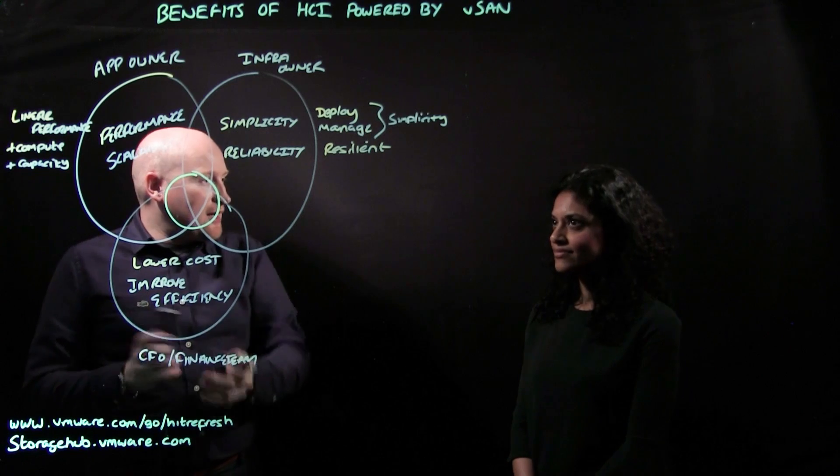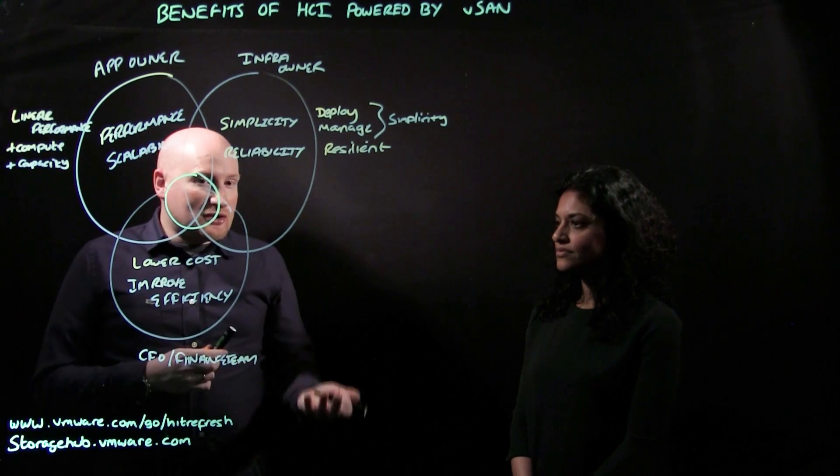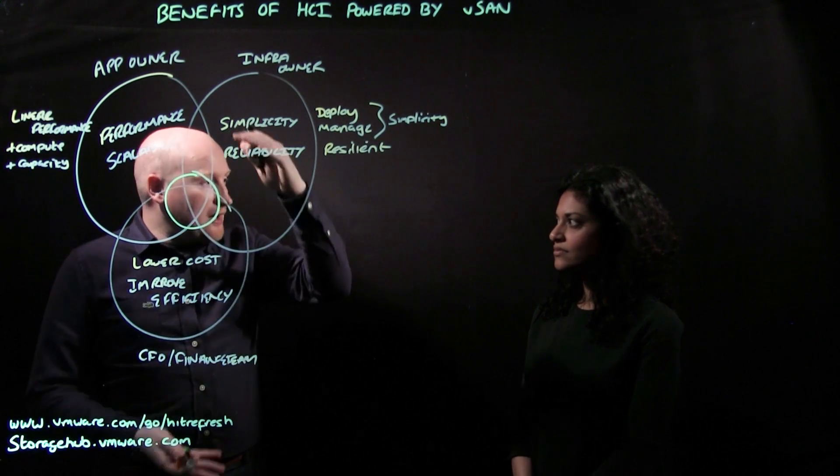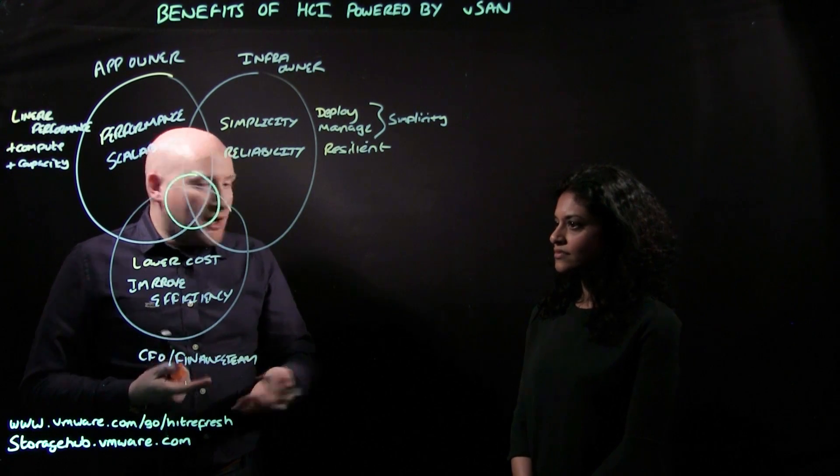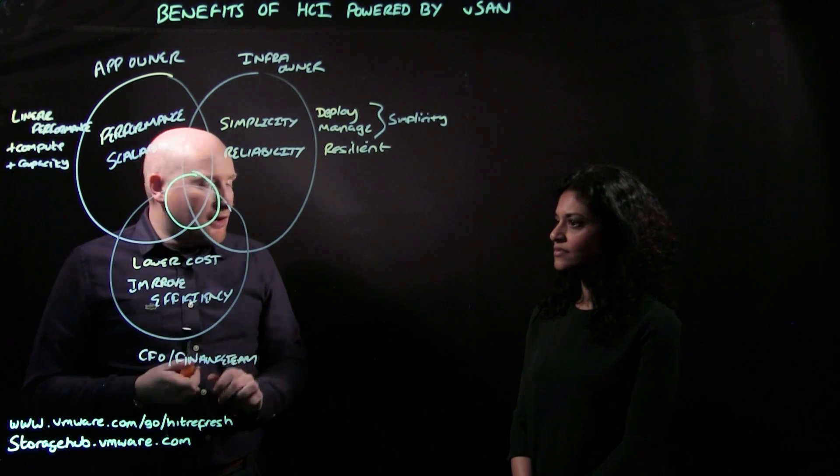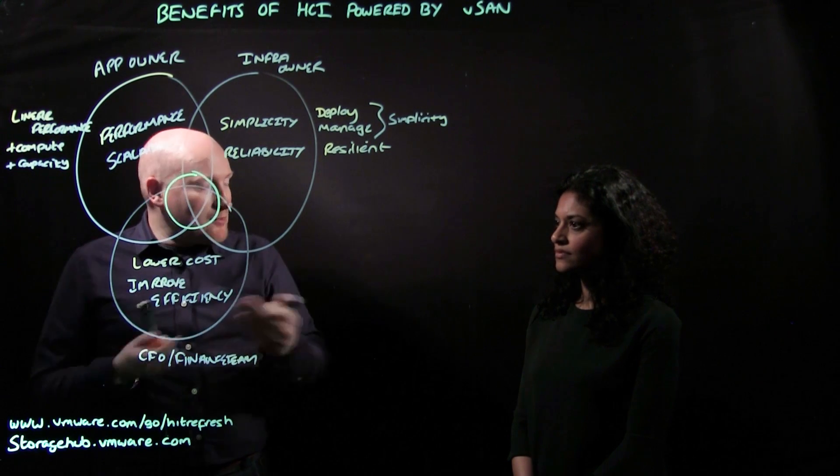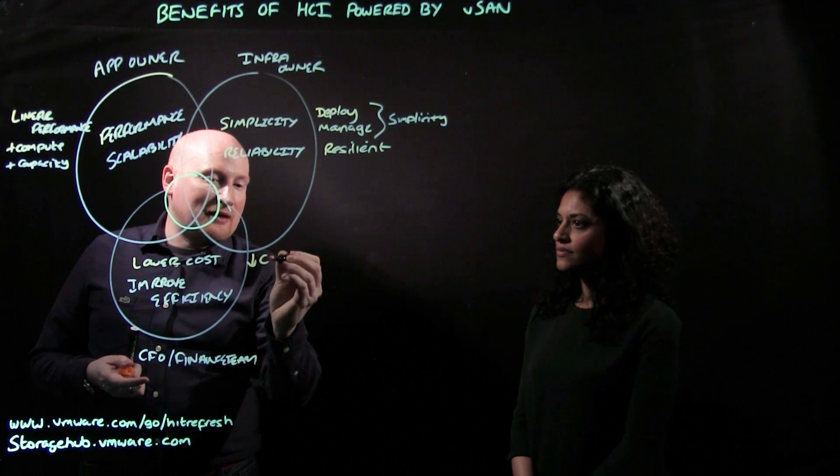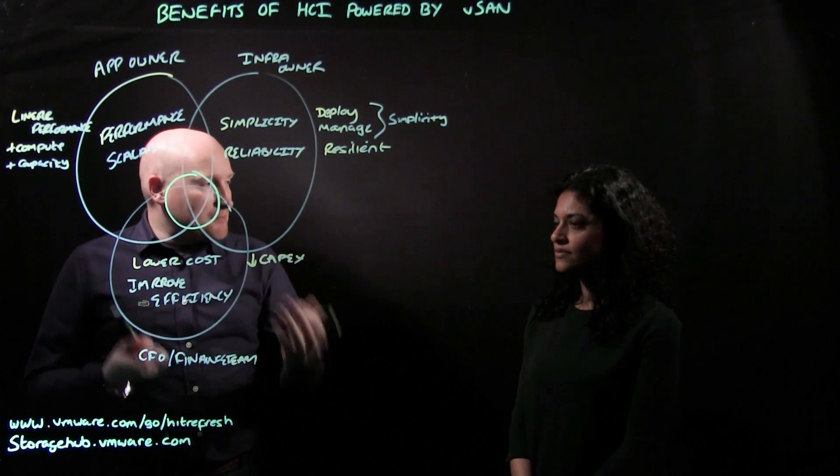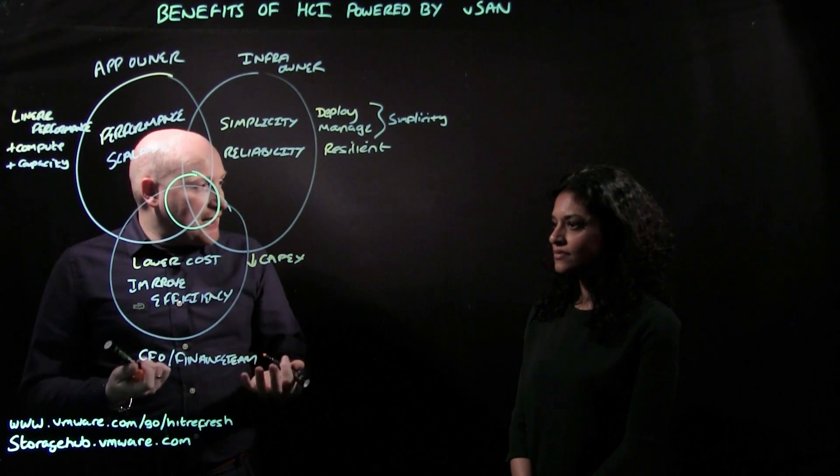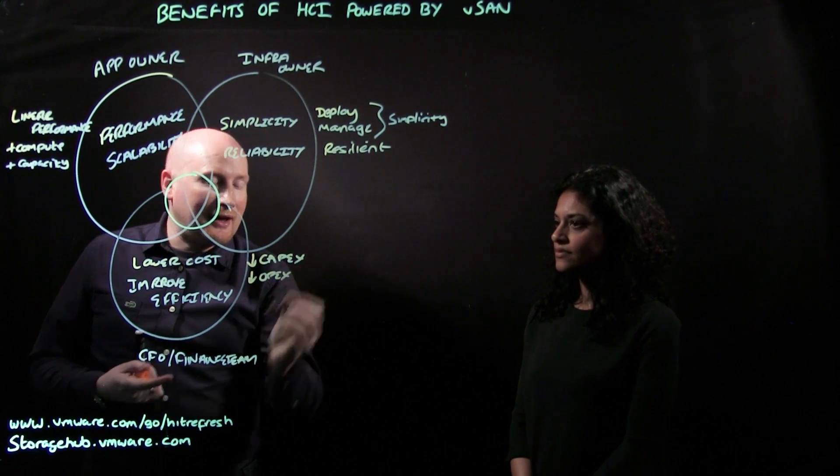What about the guys down here, the CFO or the finance team? They're looking to lower costs. Well, in the olden days of traditional storage, you would typically have to buy a big array that was oversized for your requirements, whether you grew into that environment or not, and that usually involved a high upfront cost. But with vSAN, because you can actually build environments that meet your requirements today and scale those environments as and when you need to, that actually brings down your capital expenditure. And now that you've got more of a simplistic deployment and simplistic management, you then start to gain on improved efficiency, so you start to reduce your opex.